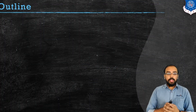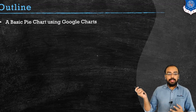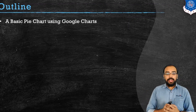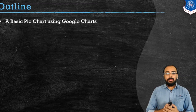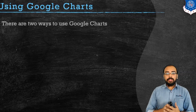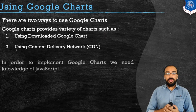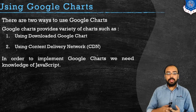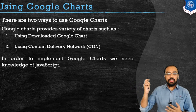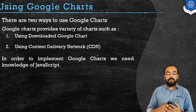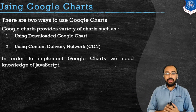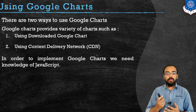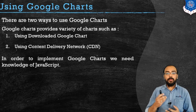Today's outline is a basic pie chart using Google Charts. We will explore how to use Google Charts with pie charts. There are two different approaches: the first one is using downloaded Google Charts, and the second one is using CDN, that is, Content Delivery Network. Working with Google Charts requires knowledge of JavaScript.